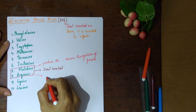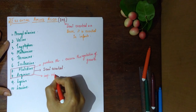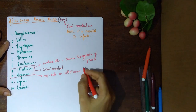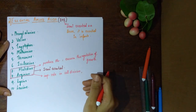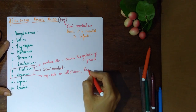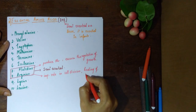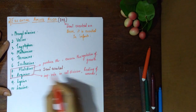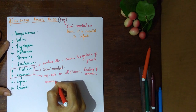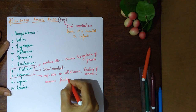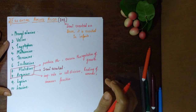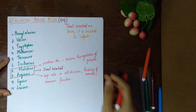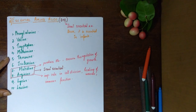Arginine has an important role in cell division, which is very important during the growth stage of life when rapid cell division is taking place. You also get help in the healing of wounds. Arginine also improves immune function, which is very critical during the early stages of life, as small children are prone to various illnesses.